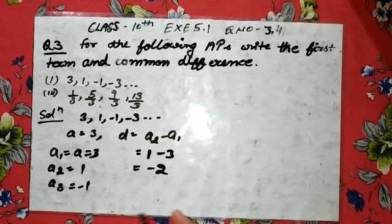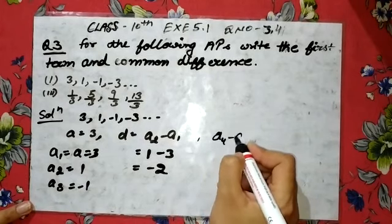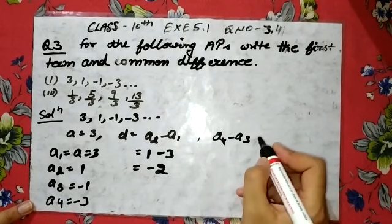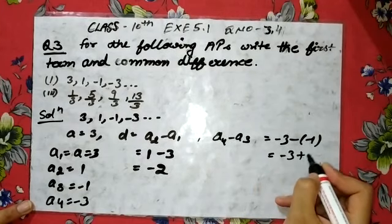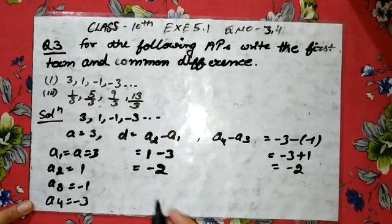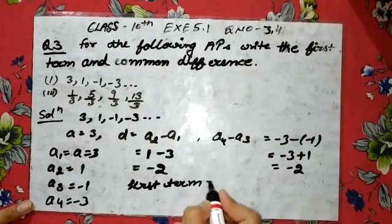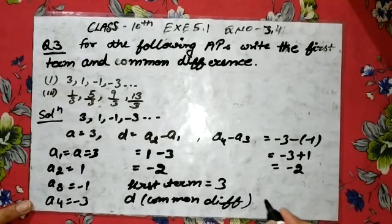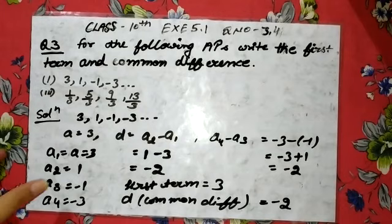Similarly, we can find out the other values of D. That is your A4 minus A3 also. When A4 is minus 3, put here, this is minus 3 minus 1, that is equal to minus 3 plus 1, which is equal to minus 2. So you have to write first term is 3 and D, that is your common difference, minus 2.